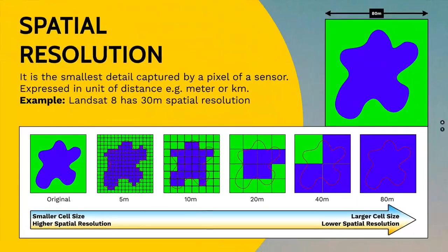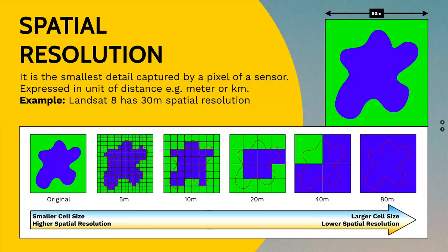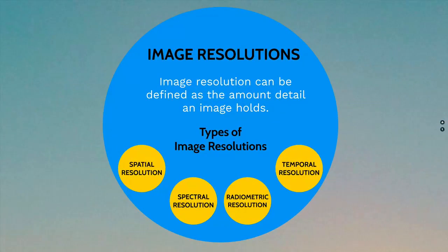That covers spatial resolution. Now let's move to the next type of image resolution: spectral resolution.